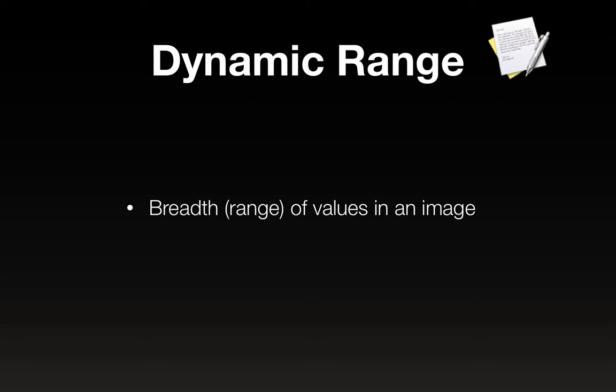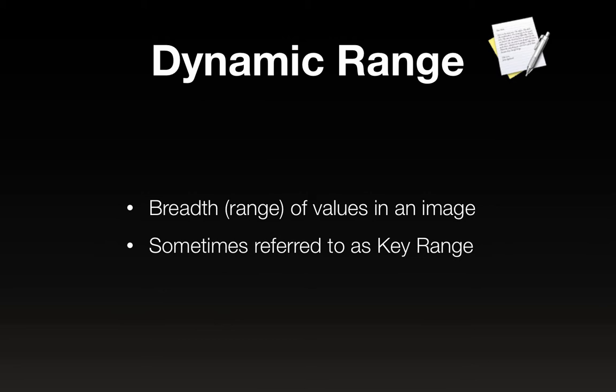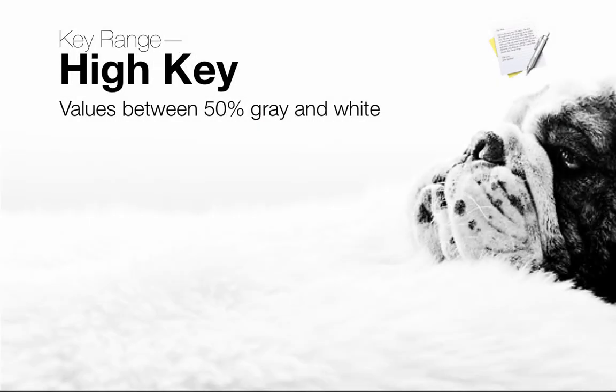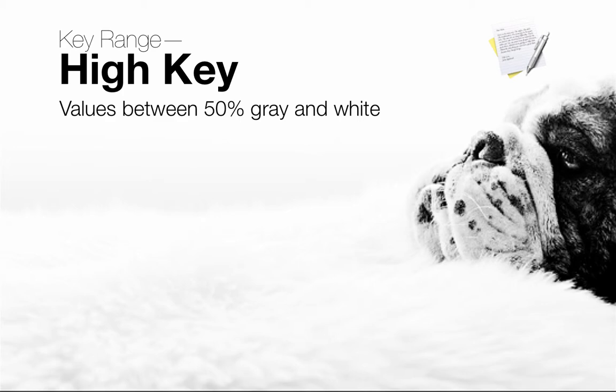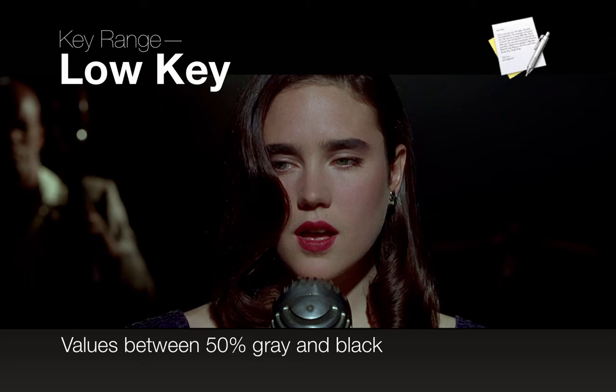Dynamic range is the breadth or range of values in an image, sometimes referred to as key range. You want to try to achieve the widest dynamic range that you can on your imagery, generally speaking — especially with photography. High key images are primarily values between 50% gray and white — in other words, they're just pretty light images. Low key, of course, is just a dark image: values typically between 50% gray and black.